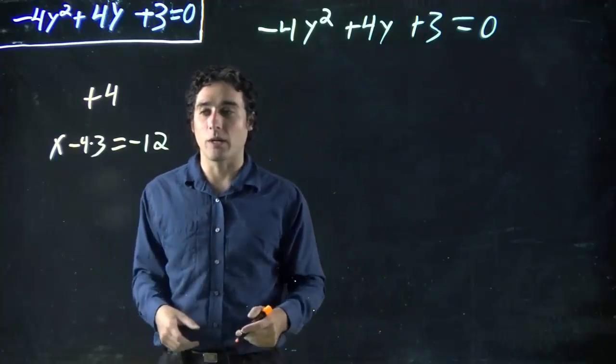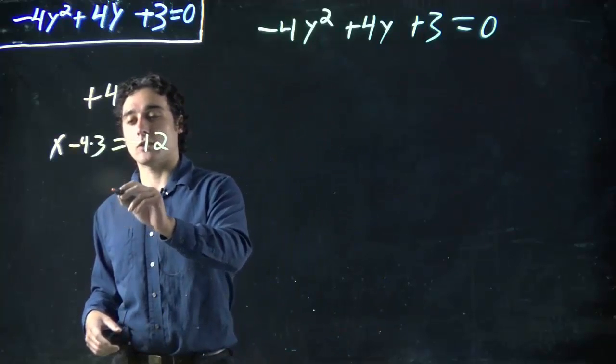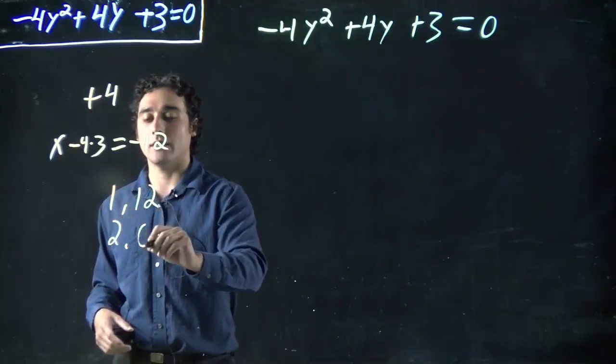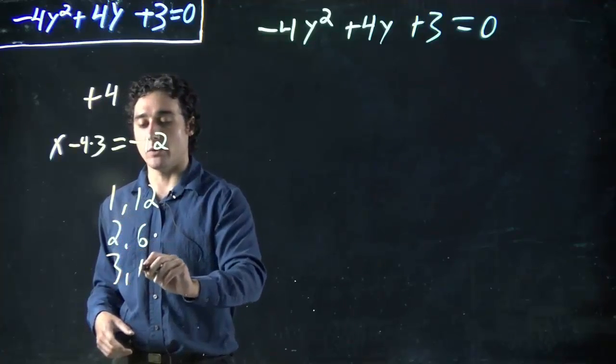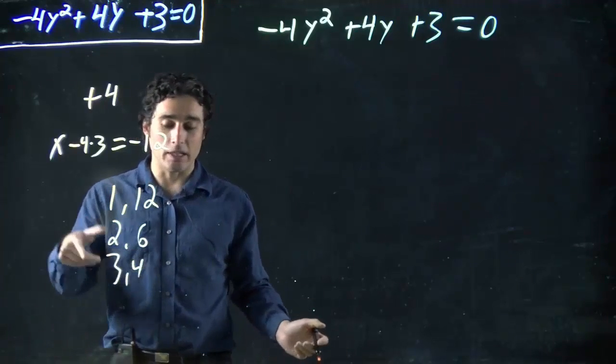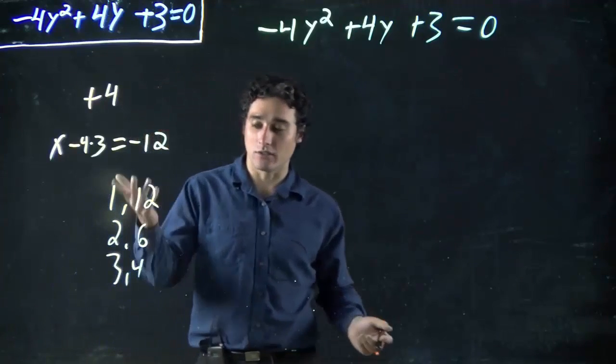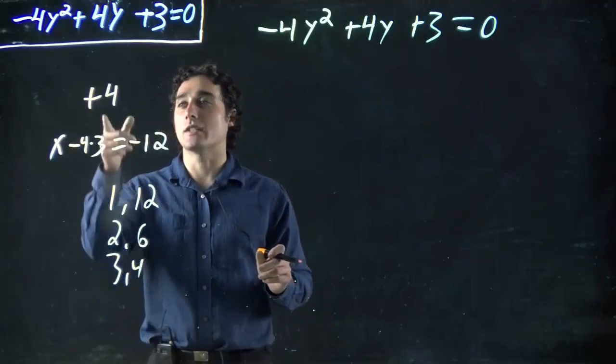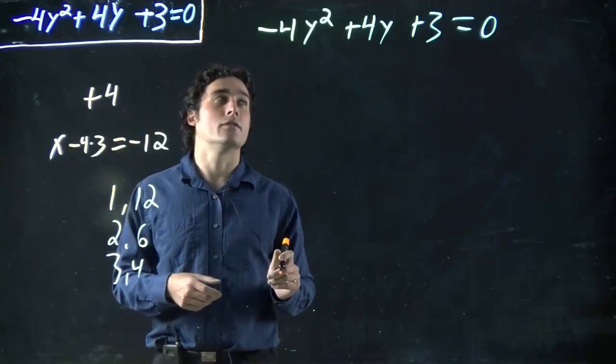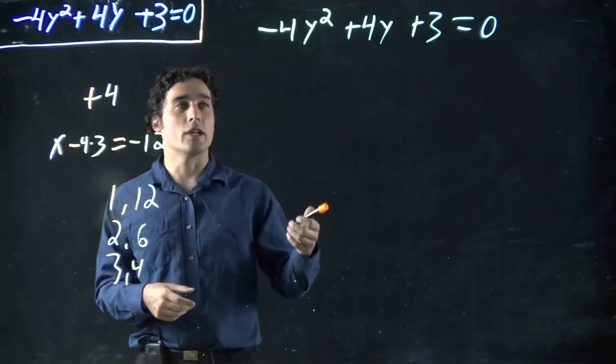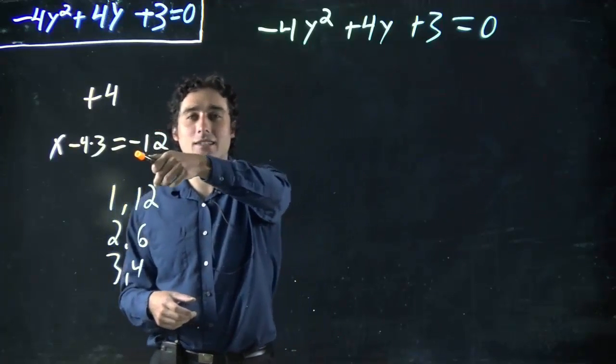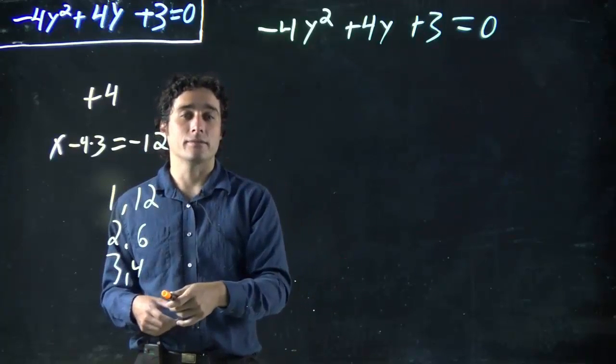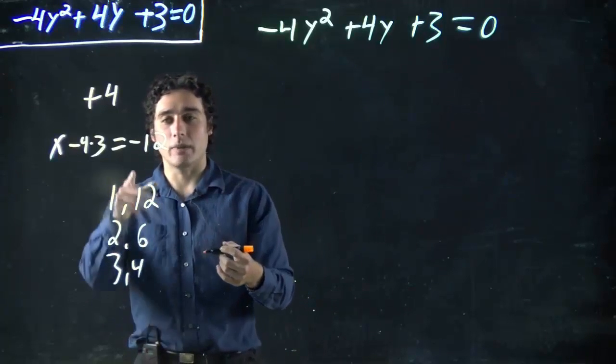As always, focus on the -12 first. What's going to give us 12? 1 and 12, 2 and 6, 3 and 4, and that's it. Which of these is going to work out to give us plus 4? Remember, we can look at this and think it has to be -12, so one of them is going to have to be positive, one has to be negative, because positive and negative make a negative.